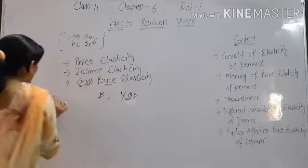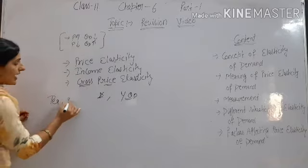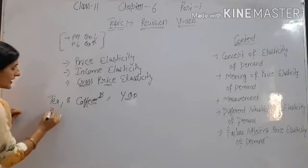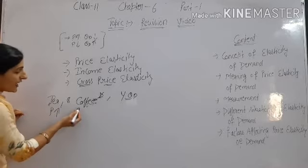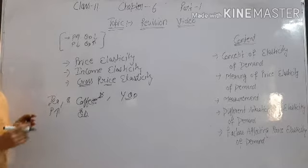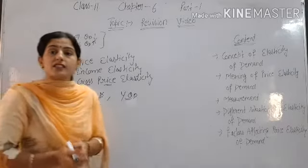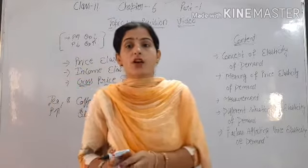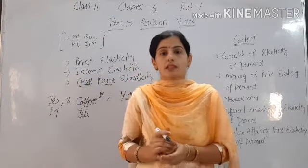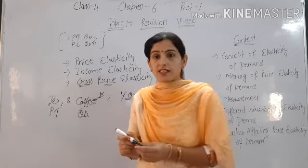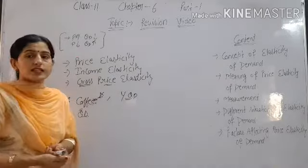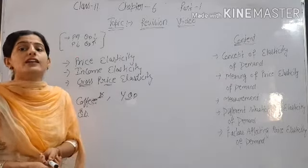Cross price elasticity means the change in price of one commodity — for example, a change in price of X — and what effect that has on the quantity demanded of another good Y. We discuss two goods: substitute and complementary goods. For example, tea and coffee are substitute goods. An increase in the price of tea and its effect on the quantity demanded of coffee — that is cross price elasticity of demand. So we have discussed the three types: price, income, and cross.